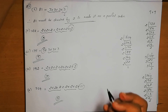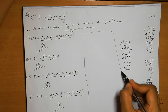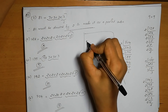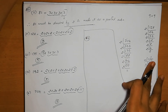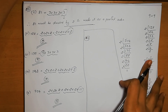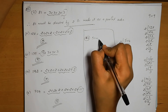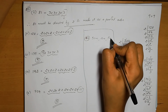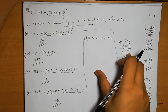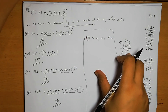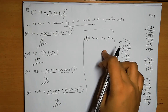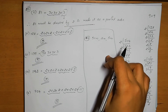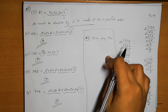Question number 4: Paras makes a cuboid of plasticine of sides 5 cm, 2 cm, and 5 cm. How many such cuboids will he need to form a cube? The sides of the cuboid are 5, 2, and 5.